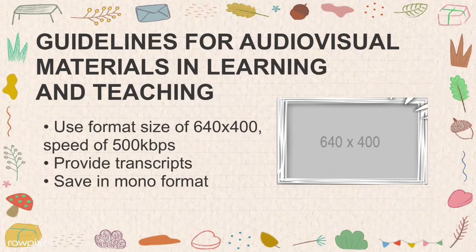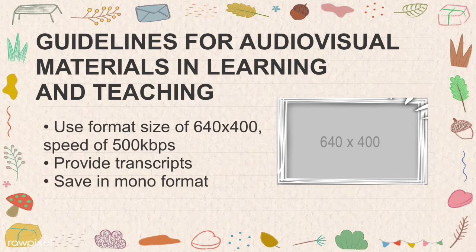Fourth, use MP4 format with a size of 640 by 400 and a speed of 500 kbps — the 640x400 or 16:10 aspect ratio is the most used because text is easy to read, and 500 kbps is fast enough for videos. Fifth, provide transcripts for audio and video files — take note of important information or print a copy to review. Sixth, save audio files in mono format so that what you hear from both earbuds sounds the same, avoiding confusion.